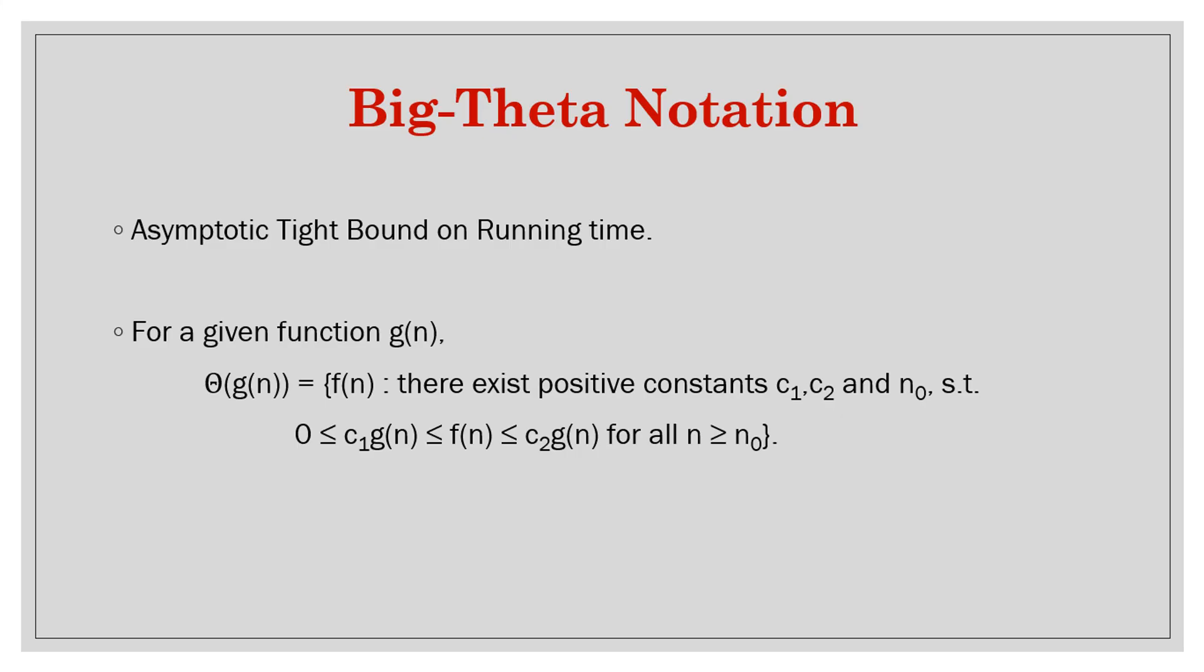Big-Theta notation naturally is a tighter bound on the running time. It gives you a tight bound that the running time should lie within. So if the running time was something like this, and you want to estimate an upper bound, you can think of it like a function like this.